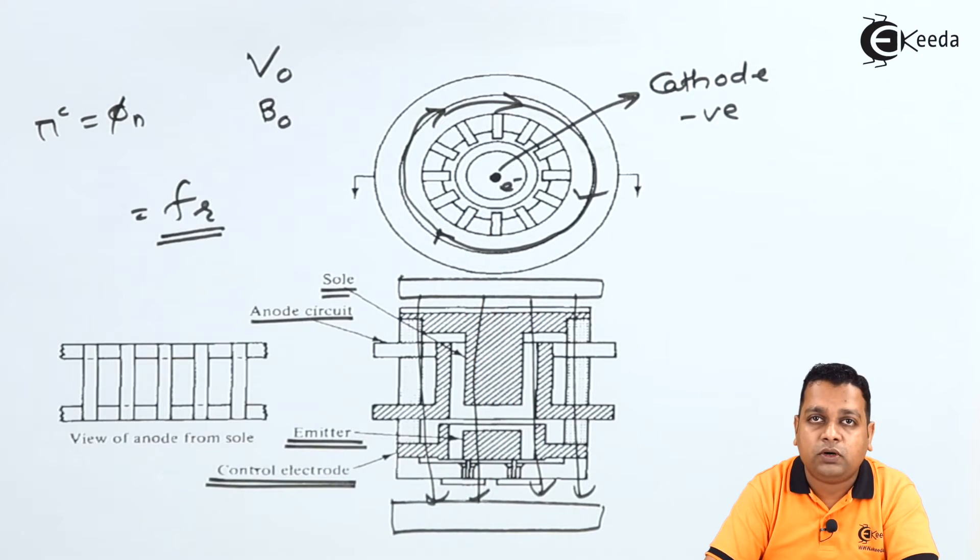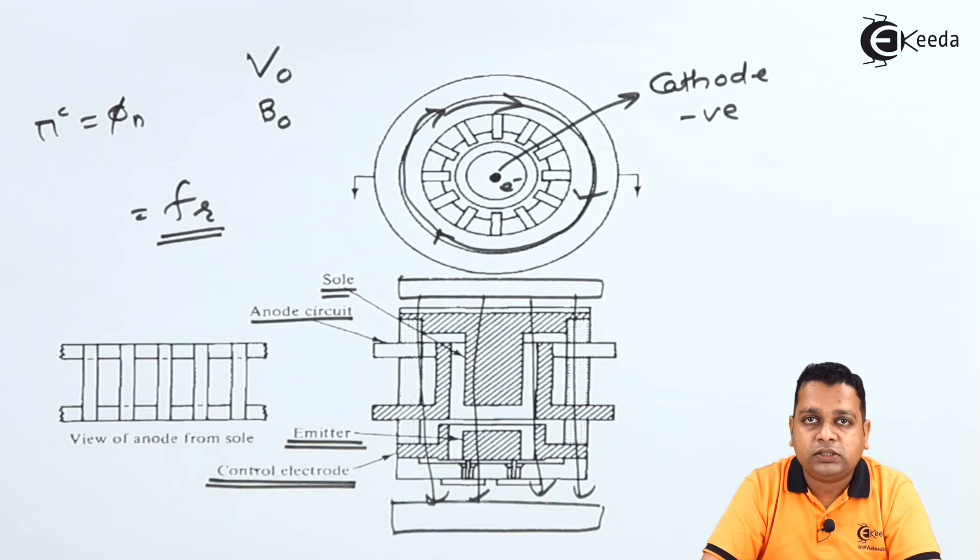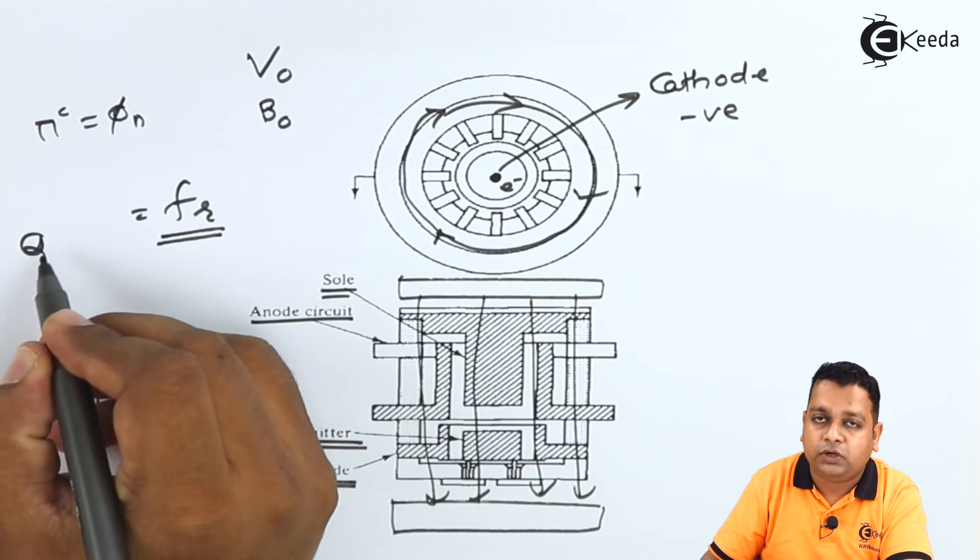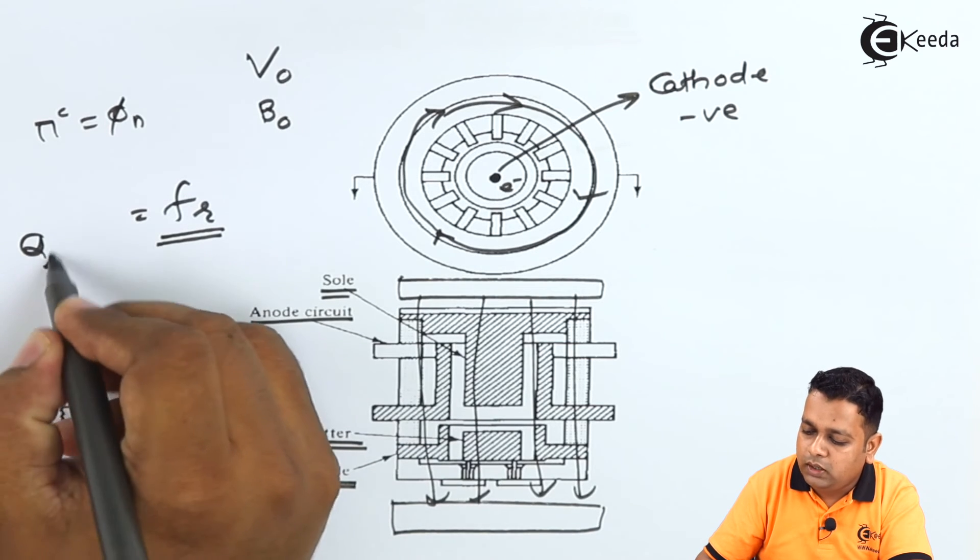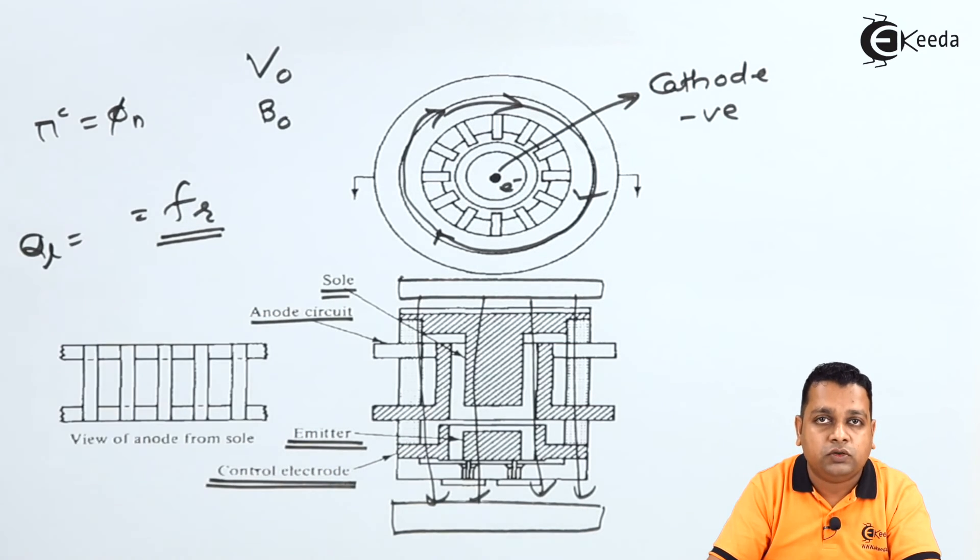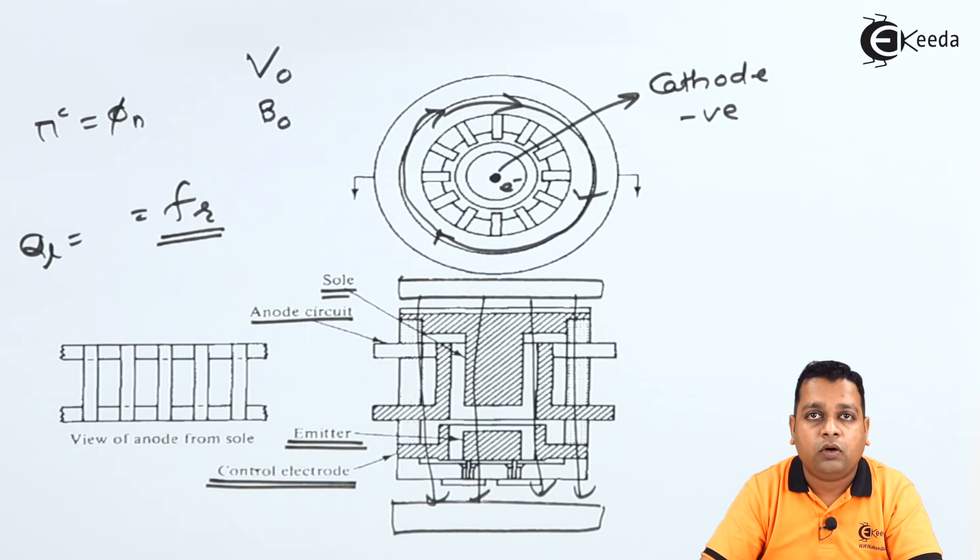Hence the name of this particular magnetron is called as voltage tunable magnetron. And the voltage tunable magnetron is worked for the broadband applications. So while making the construction of this particular device the low quality value factor, so generally Q denotes the quality factor for any of the resonant cavity.